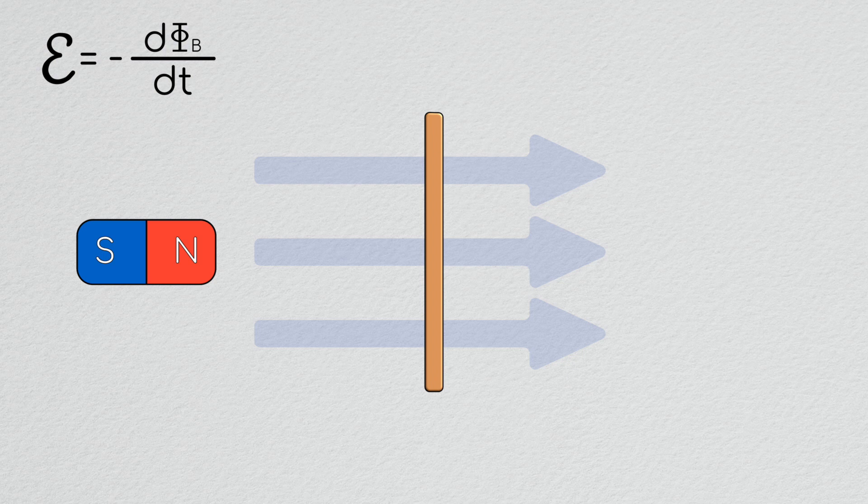In a motor this voltage is referred to as back electromotive force or back EMF for short, and it's fundamentally important for understanding the dynamic properties of motors.